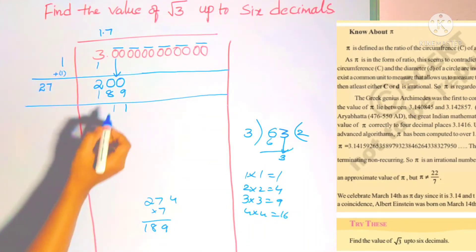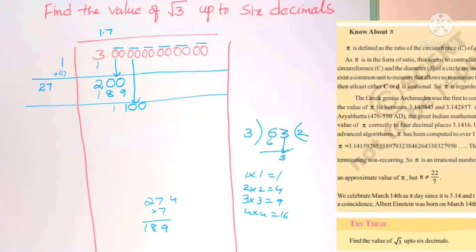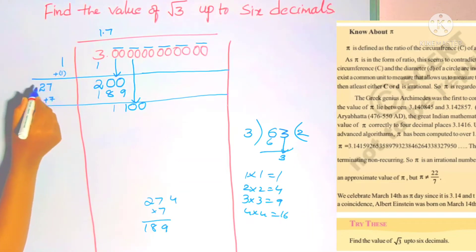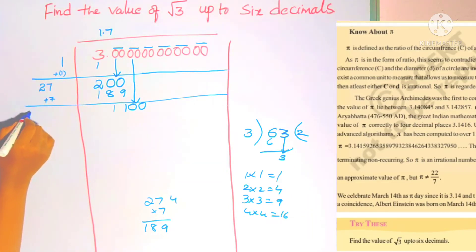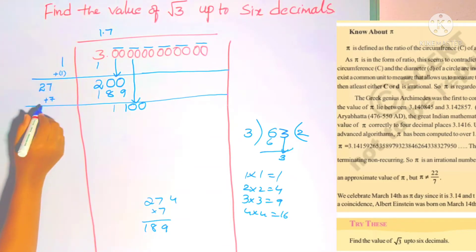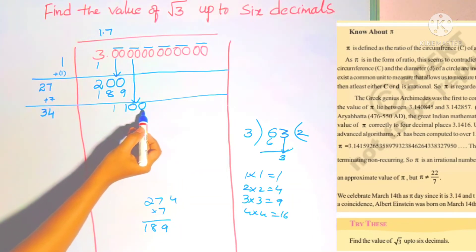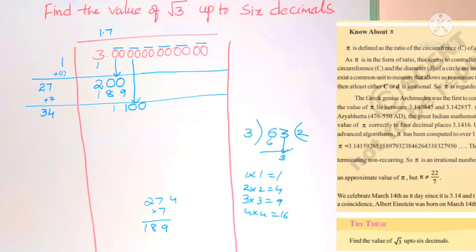Bring the next pair of zeros down. The last digit we wrote in the divisor was 7, so add 7 to 27: 27+7=34. Write it a little to the left. Now it is 1100. Just exclude the last digit — it becomes 110, or we check 11.